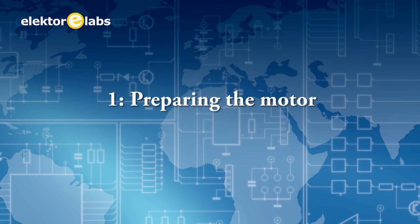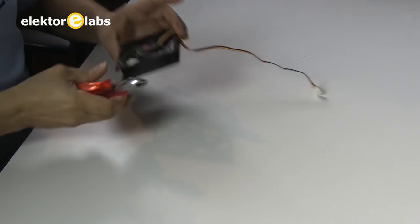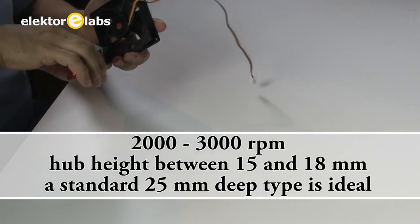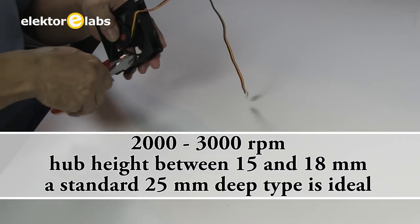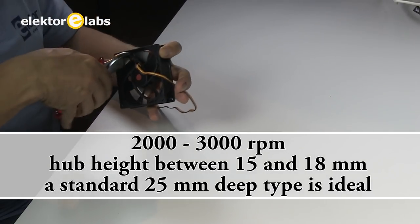The motor will be adapted from an 80mm fan normally used in PCs. Make a mark on each of the four arms joining the motor to its frame at 25mm from the center line.